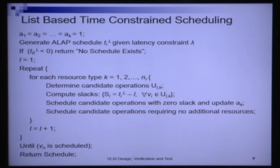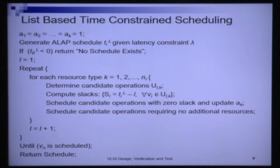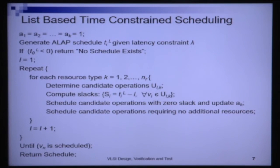a_k is the number of resources of type k being handled in this iteration. After scheduling the 0-slack operations, if fewer than a_k resources have been required we have residual resources remaining. Since we are not increasing the number of resources required, we can use these residual resources to schedule additional candidate operations. We schedule candidate operations requiring no additional resources using this remaining capacity, then increment time and repeat until the schedule is complete.